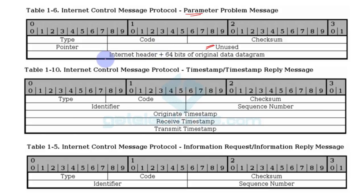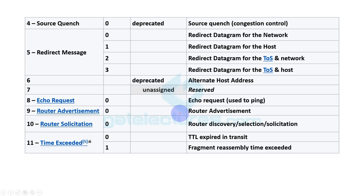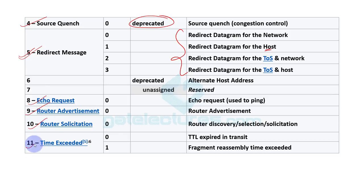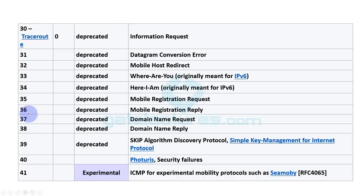For parameter problem, two extra fields are added. For timestamp request and reply, four extra fields are added. For information request and reply, two extra fields are used. As shown in the presentation, ICMP can represent many control messages: destination network unreachable, destination host unreachable, destination protocol unreachable, source quench (now deprecated), redirect messages, echo reply, router advertisement, router solicitation, time exceeded, timestamp reply, information request, and more.